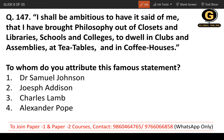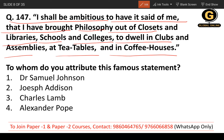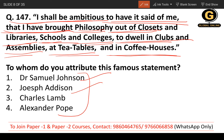Question 147: 'I shall be ambitious to have it said of me that I have brought philosophy out of closets and libraries, schools and colleges, to dwell in clubs and assemblies, at tea tables and in coffee houses.' Who said these lines? The options are Samuel Johnson, Joseph Addison, Charles Lamb, and Alexander Pope. The correct answer is Joseph Addison — the second option.